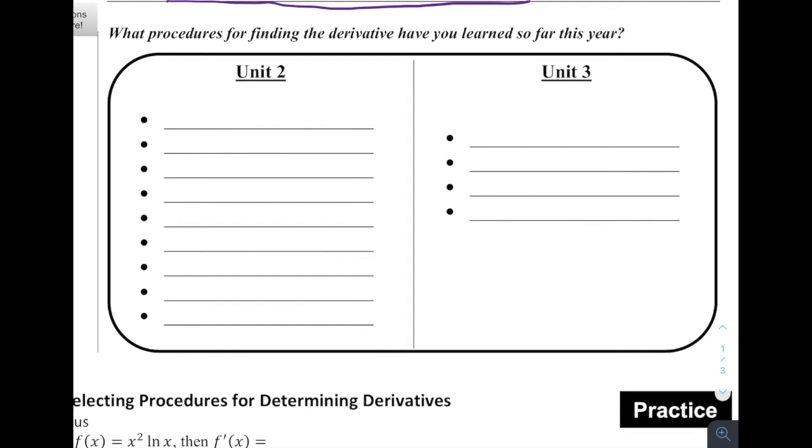So what procedures have we talked about so far this year? In Unit 2, the first one that we learned was this thing called the power rule for taking derivatives. We then learned how to take the derivative of constants. The derivative of any constant is zero. We then learned how to take the derivative of constant multiples. So what do you do when there's a coefficient in front of a variable? Then we learned the sum and difference rules. After that, we learned a bunch of trig rules, so trig derivatives.